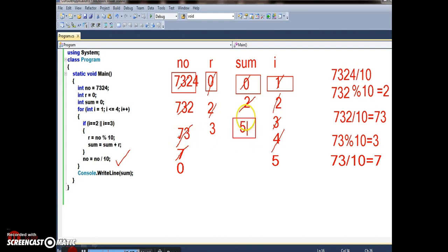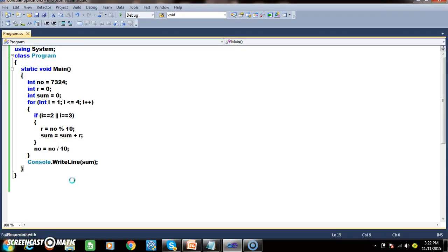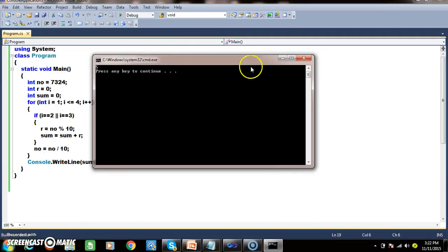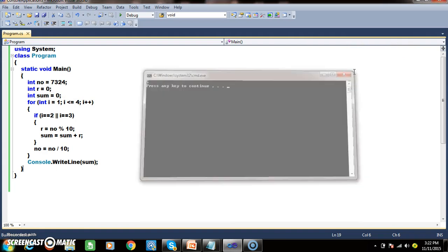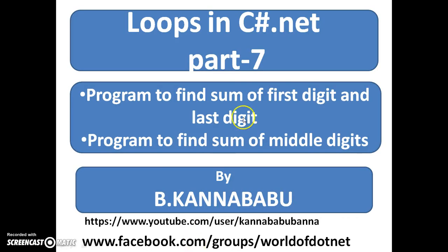I hope you understood. Let us see the program and check the output. Sum of middle digits — that is 3 plus 2 — is 5. In this video we discussed the problem to find the sum of first and last digit, and the problem to find the sum of middle digits. Similarly, you can write programs to find the sum of squares of the first and last digit, and the sum of squares of the middle digits — try that as homework. Thank you, have a nice day.